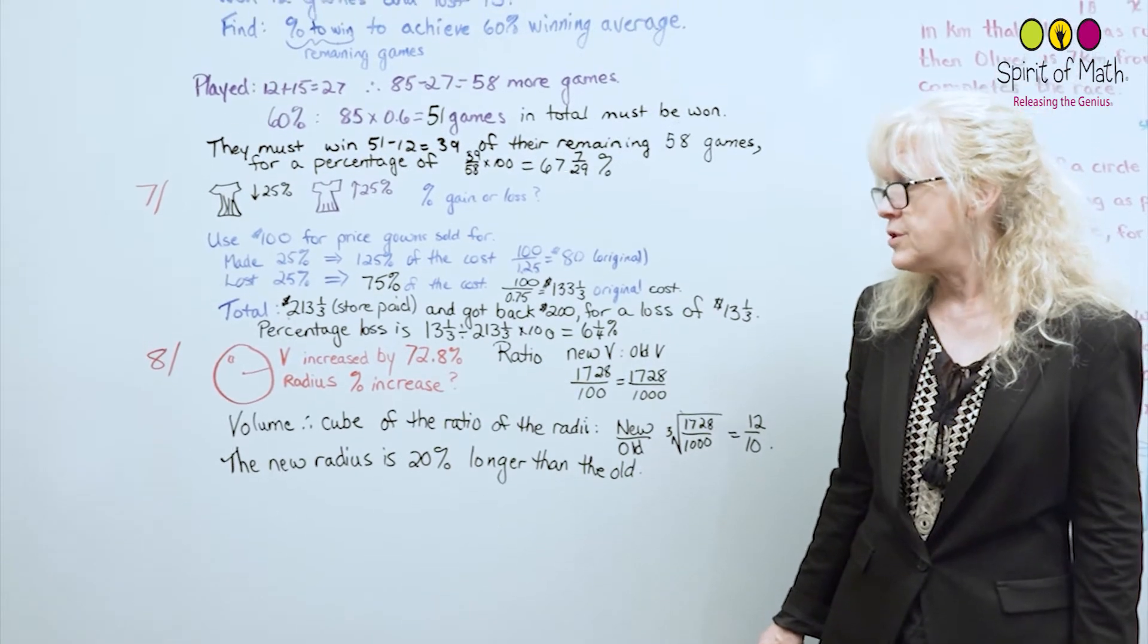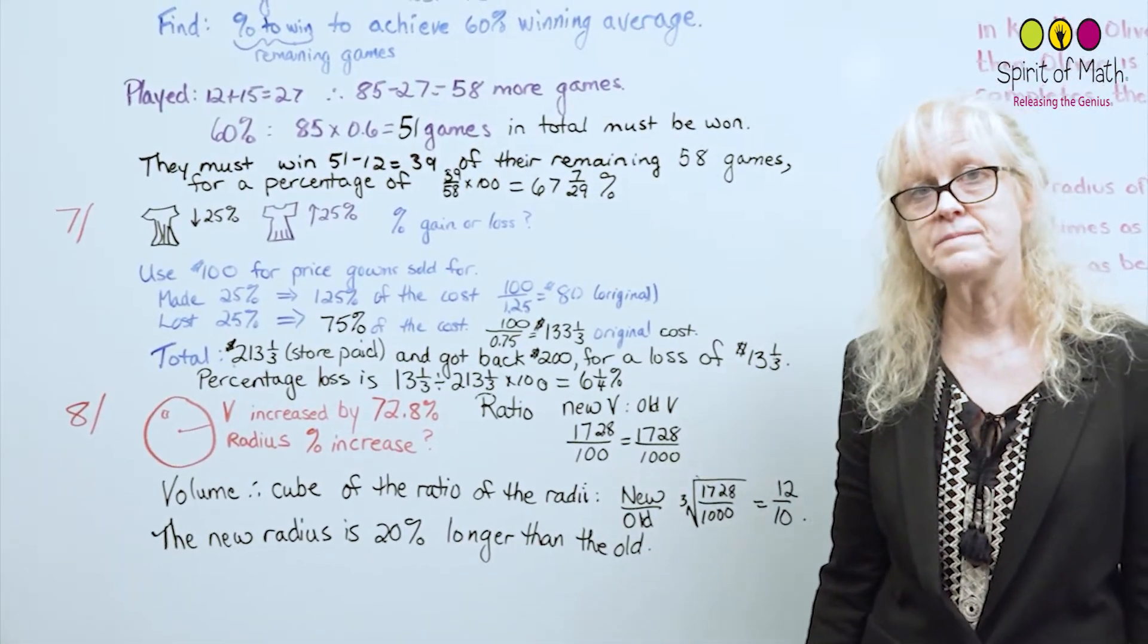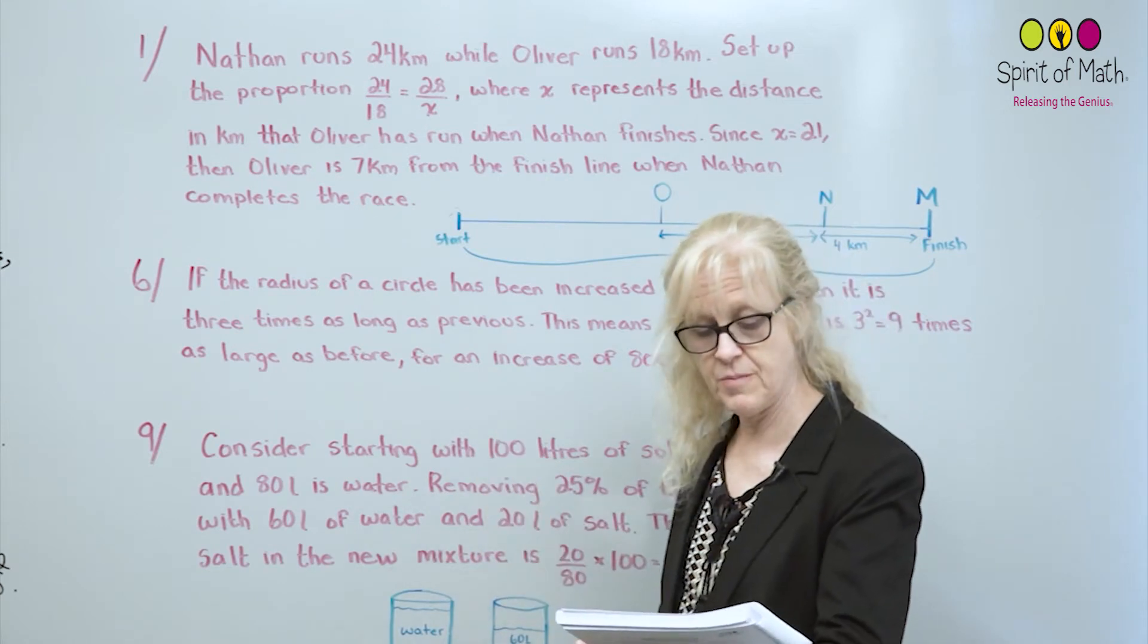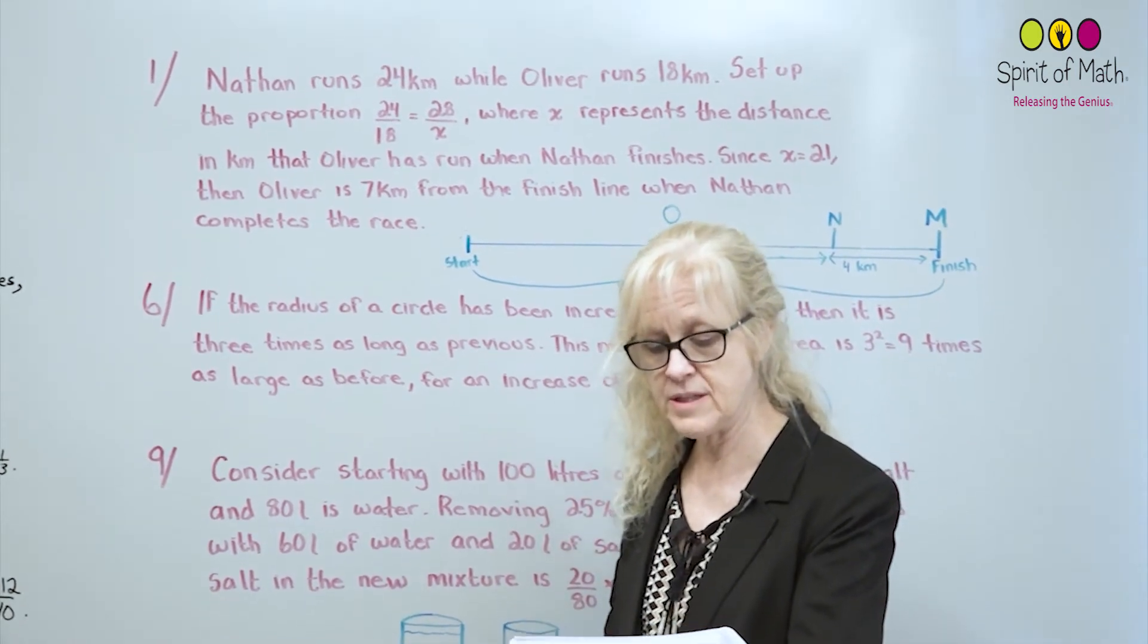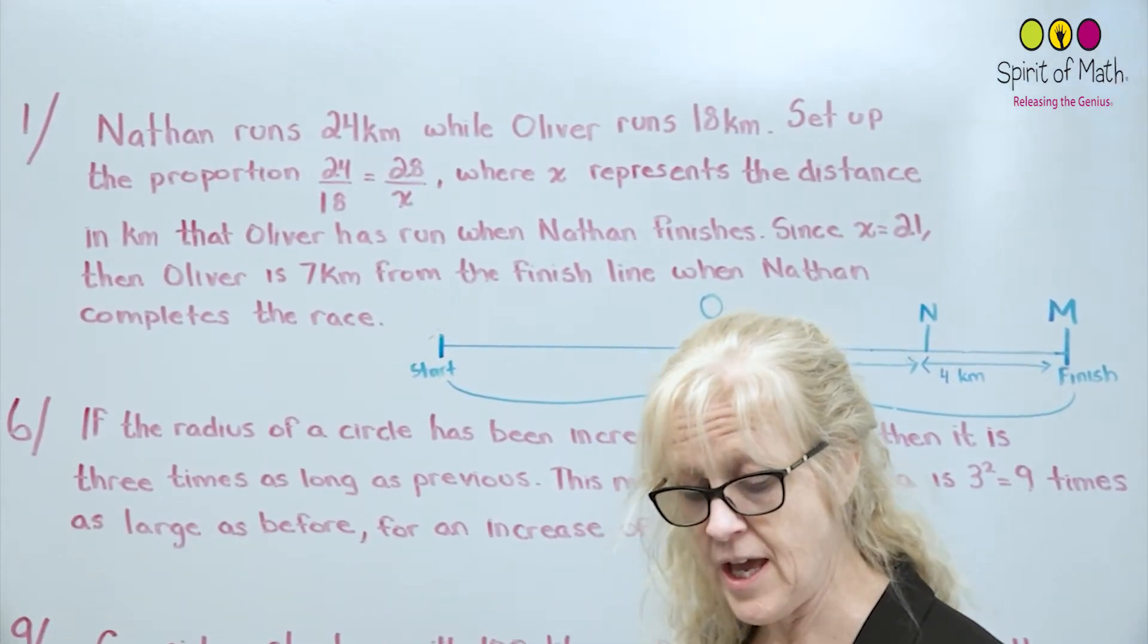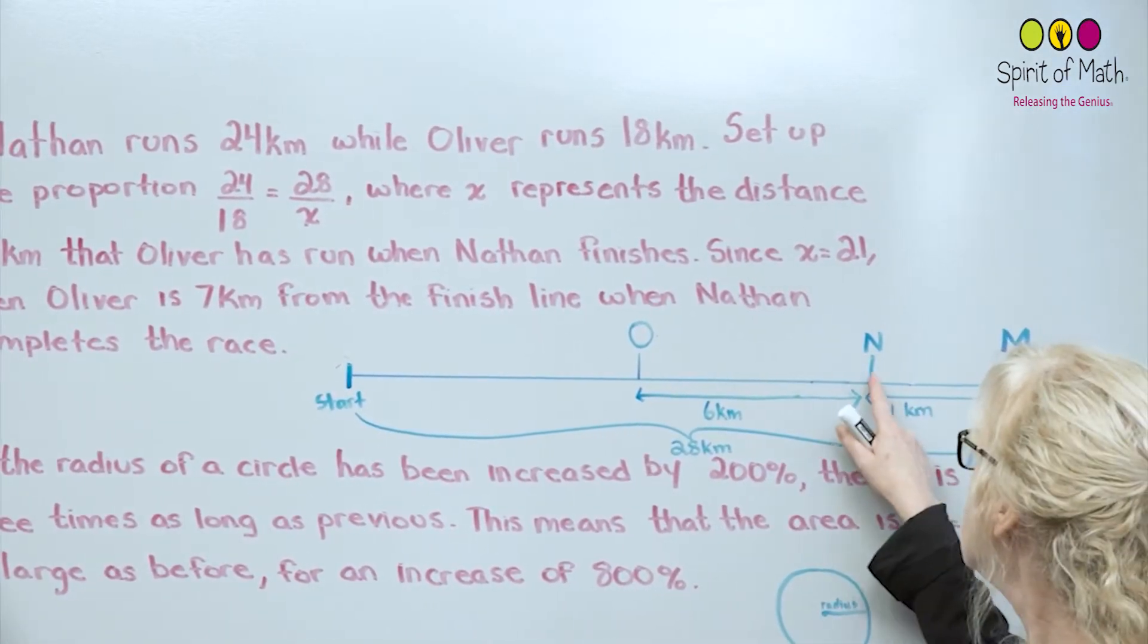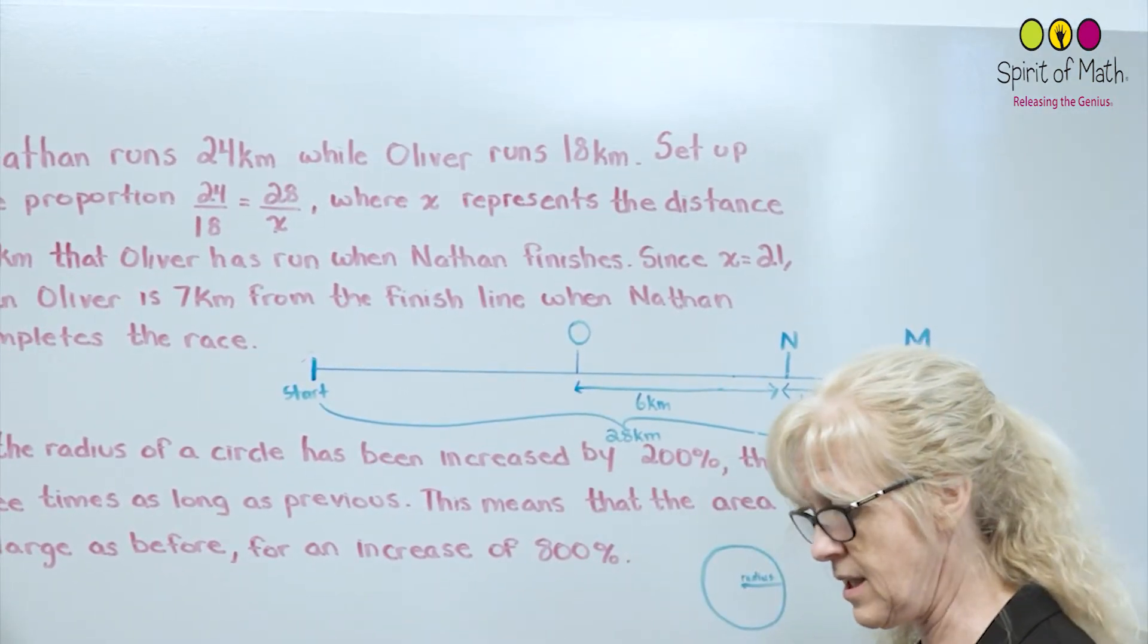Now, what we're going to do is go and look at the other three questions on the reduced bank. Now we're going to look at the other three questions, and they are 1, 6, and 9. So let's start with question number 1. In a 28-kilometer marathon, Mike completes the race, while Nathan is still 4 kilometers from the finish line, and Oliver is 6 kilometers behind Nathan. So we've got Mike completing the race, Nathan is 4 kilometers behind, and then Oliver is 6 kilometers behind Nathan.